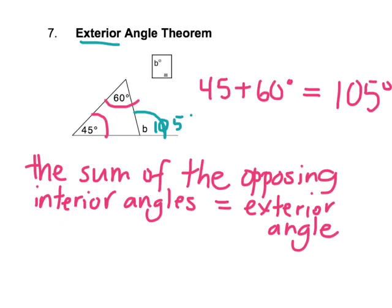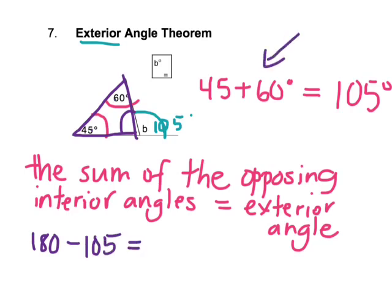Let's verify: looking at this triangle, we can find the third interior angle — 180 minus 105 is 75 degrees. We now have supplementary angles: 75 and 105 on a straight line. They add up to 180, which confirms why this rule works — you can just add the sum of the two opposing interior angles.